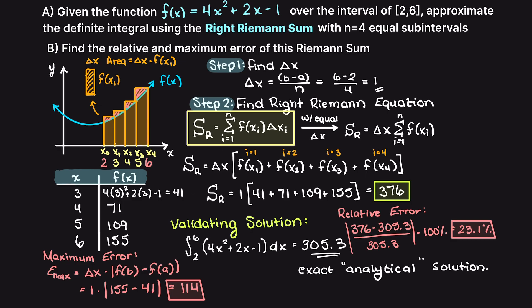Therefore, because we know our actual definite integral, we can say for this problem that the integral using Riemann sums will be 305 plus or minus 114.